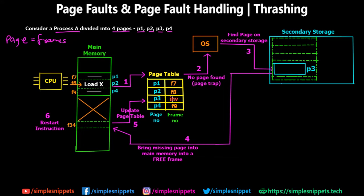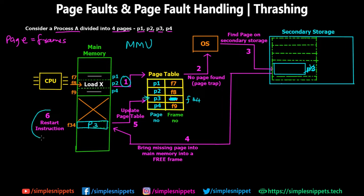Note that if P3 was already located in main memory — say in frame F34 — a page fault would not have occurred at all. The CPU would have come to 'load X', the MMU would look up P3 in the page table, find frame 34, and directly jump from step one to step six because the frame is already in memory. All the intermediate steps — two, three, four, five — are not required. The MMU would inform the CPU that P3 is in frame 34 and the CPU would execute P3 directly.